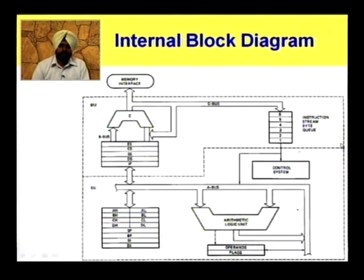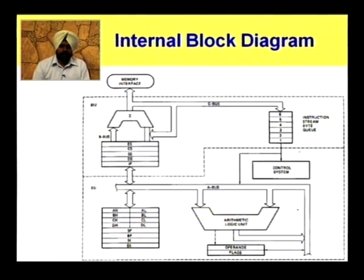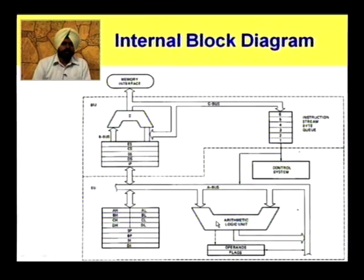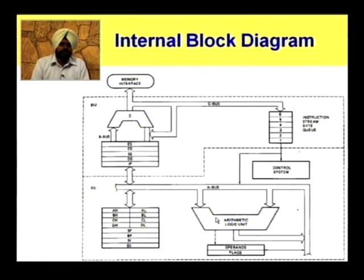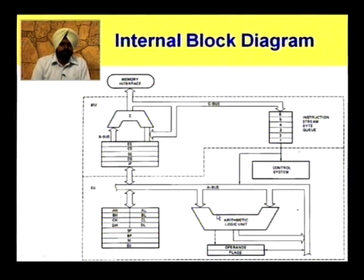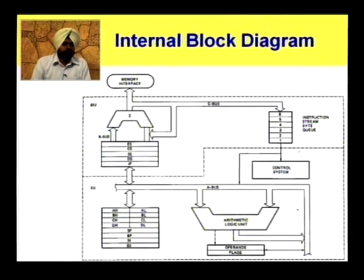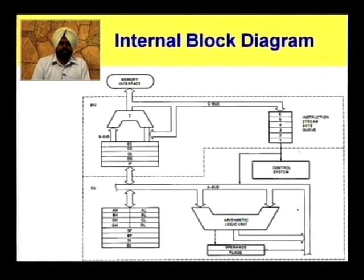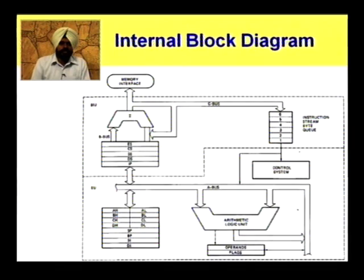We have a Control Unit which does the needful. Along with the Control Unit, we have an Arithmetic Logic Unit (ALU). This ALU is 16-bit wide — it can perform addition, subtraction, multiplication, and division. Multiplication and division were not available in the 8085, but those operations can be performed with the 8086. With 8086, you can perform 8-bit by 8-bit and 16-bit by 8-bit division, and 8-bit by 8-bit and 16-bit by 16-bit multiplication. It is fundamentally a 16-bit arithmetic and logical unit, and the result of operations is stored in a 16-bit flag register with 9 flags.